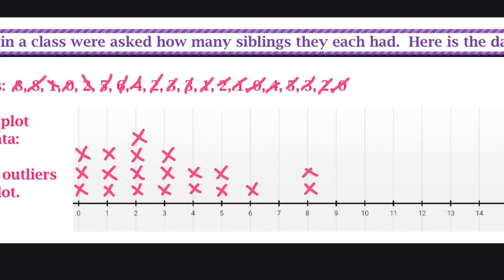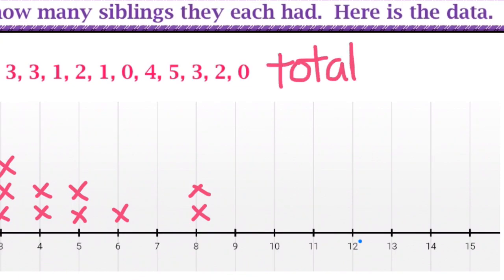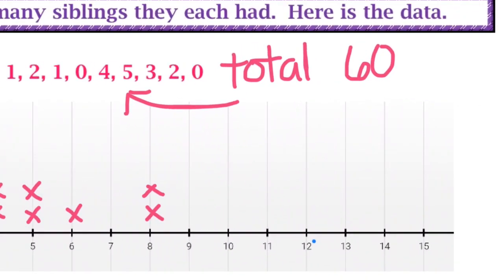After our dot plot is complete, we're going to find the mean, or the average. Remember, there's two steps to finding the mean. First, we find the total of all of the data. So we add everything up here and get 60.